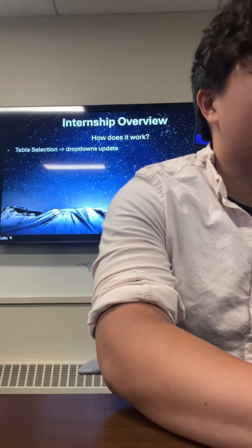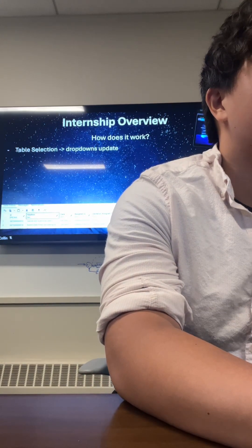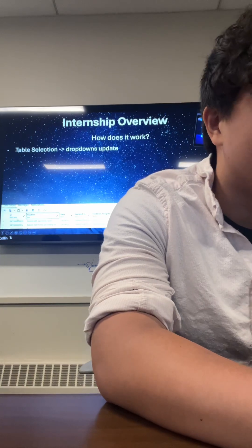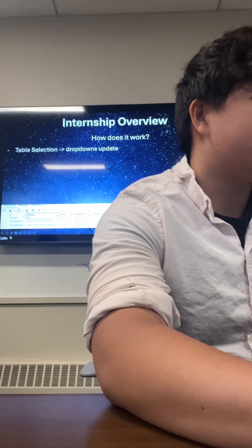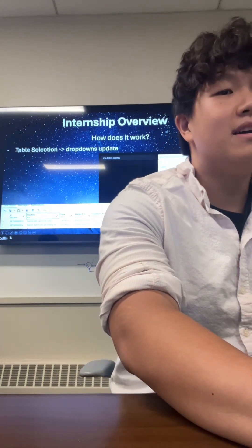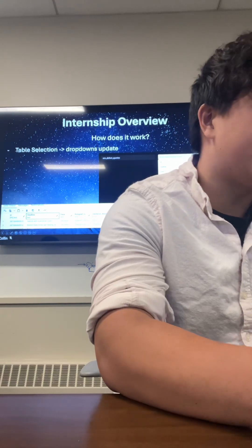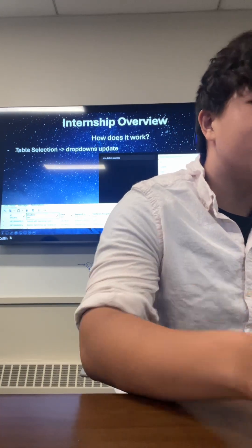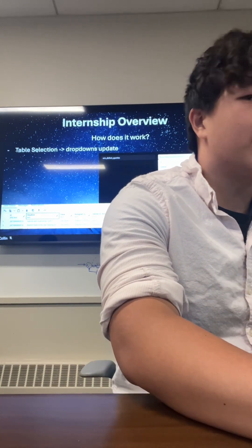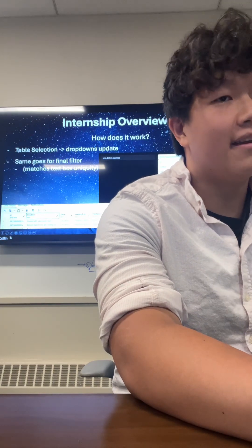The table selection is a dropdown that updates dynamically. As soon as you pick a table, it'll look through the column names — ID, headline, state, whatever is in there — and it populates dynamically. So as soon as you pick a table, this dropdown will change on click to be whatever columns your table has, with the correct amount and names.